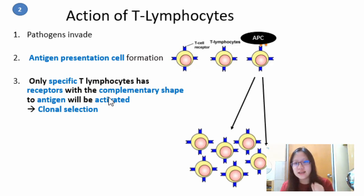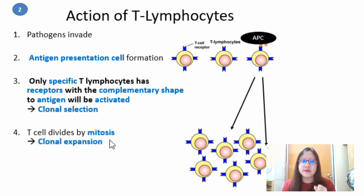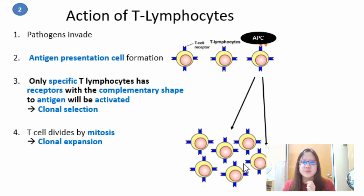That particular type of T cell is selected — this is called clonal selection. After that, it divides by mitosis, which is called clonal expansion. Among many types of T lymphocytes, only the complementary type is selected and divides to produce many T cells of the same type.